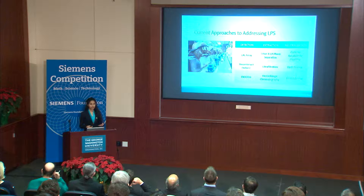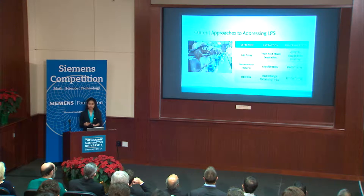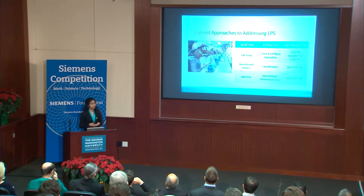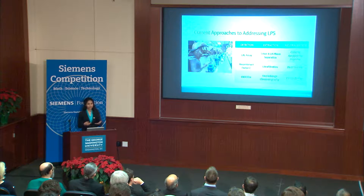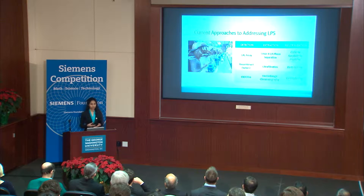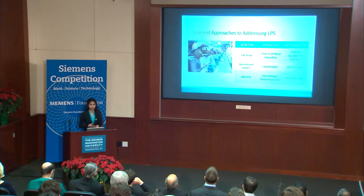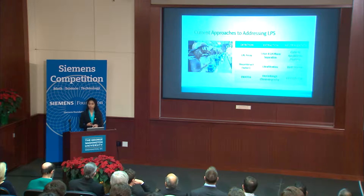The gold standard for detecting endotoxins is an assay known as the LAL assay, which uses an enzyme derived from the blood of horseshoe crabs. In addition to being prohibitively expensive, it also leads to inaccurate detection in the presence of certain salts and chaotropic agents due to a phenomenon known as low endotoxin recovery. Efforts to create recombinant versions of this enzyme or extract endotoxins via ultrafiltration or chromatography have each been characterized by economic or performance-related drawbacks.